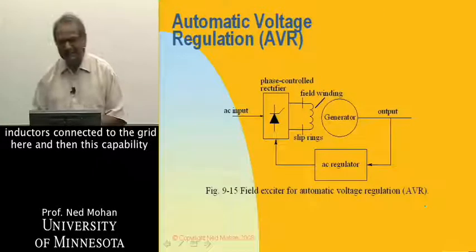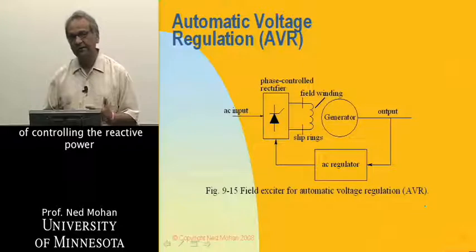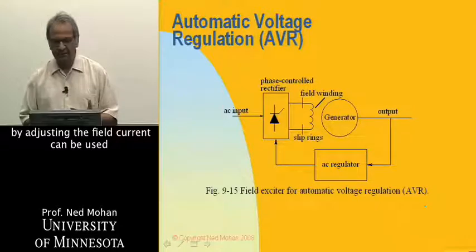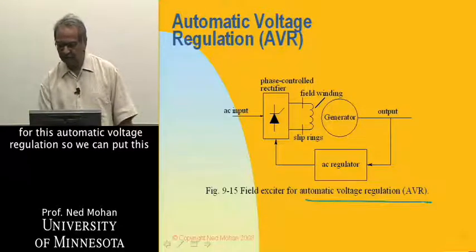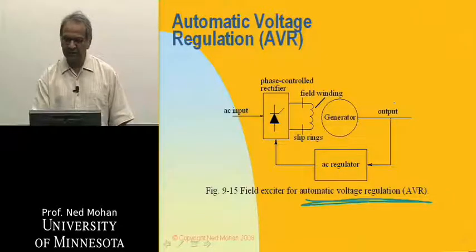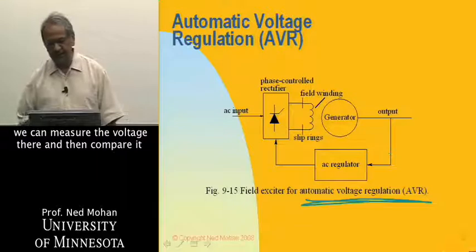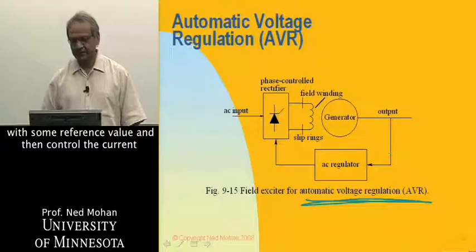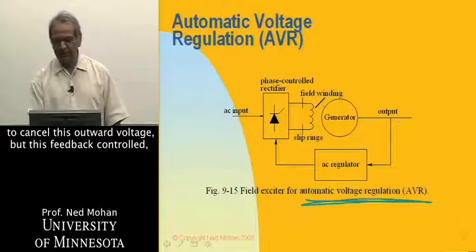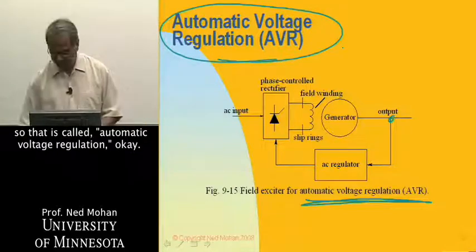This capability of controlling reactive power by adjusting the field current can be used for automatic voltage regulation. We put this in a feedback loop: wherever we want to keep a bus voltage constant, we measure the voltage there, compare it with a reference value, and control the current into the field winding to regulate the output voltage. That is called automatic voltage regulation.